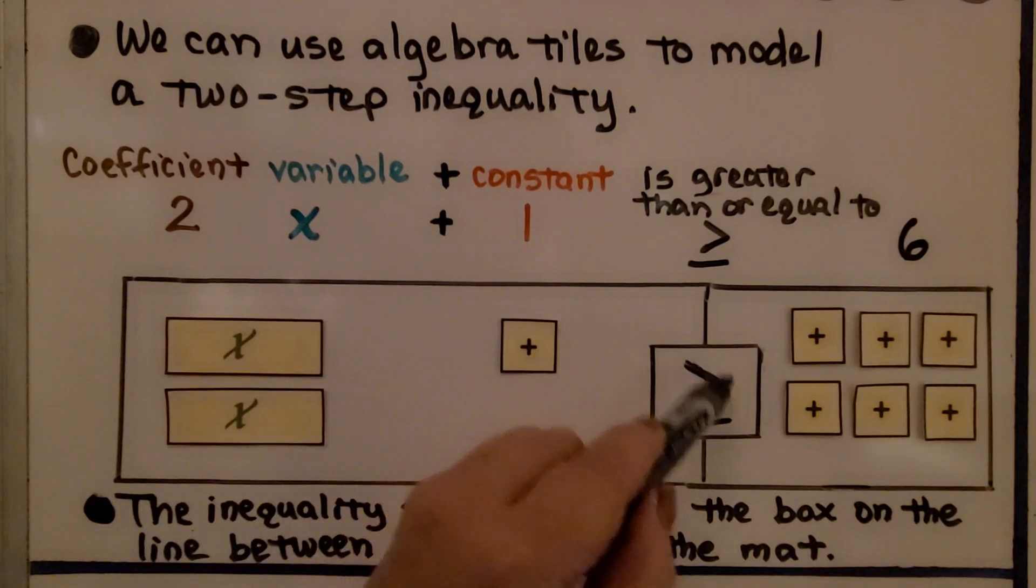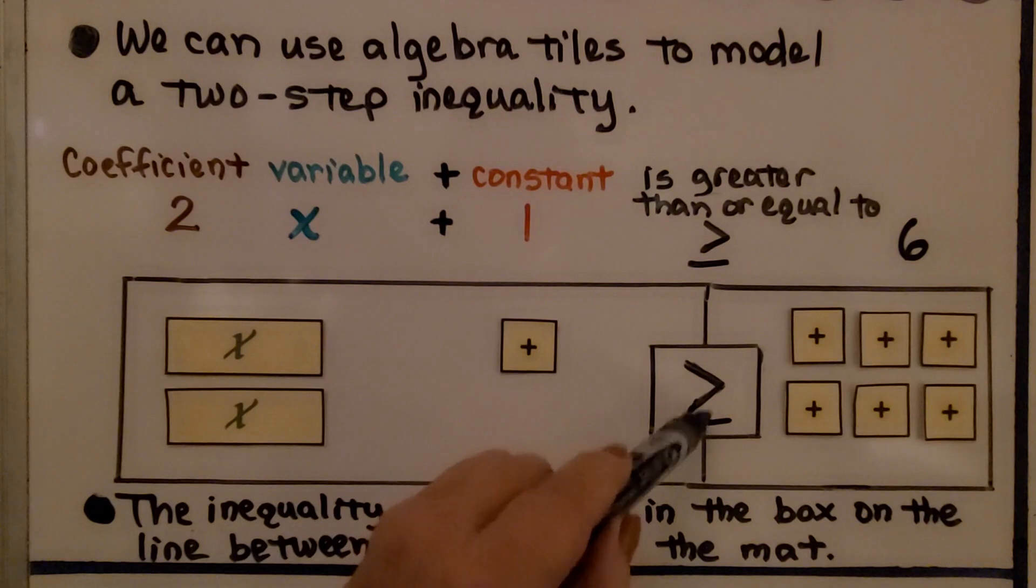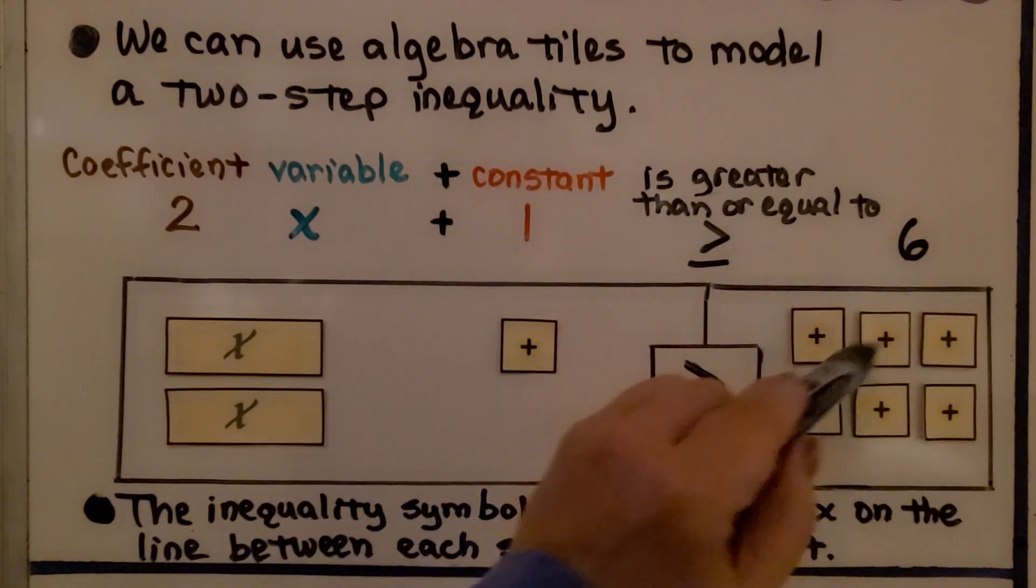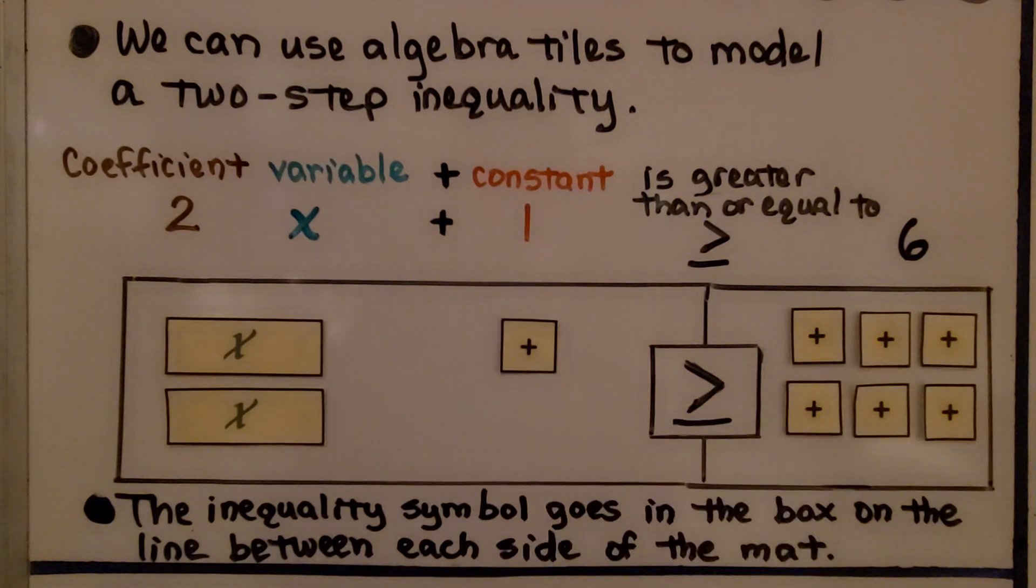And in this box, we write greater than or equal to, and we have 6. We have a positive 6, so we have 6 plus squares. The inequality symbol goes in the box on the line between each side of the mat.